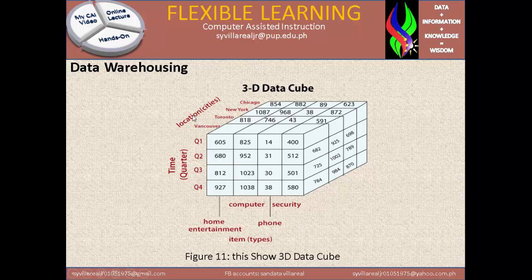We have here the location on the top part. On the right side, there is no legend given. But on the quarter itself, it identifies home entertainment, computer, phone, and security as the types of items.